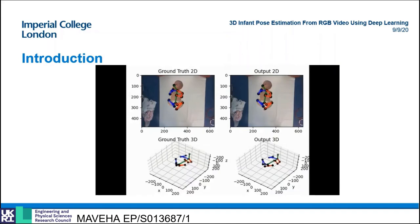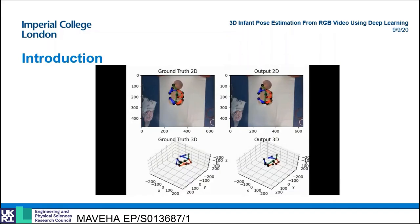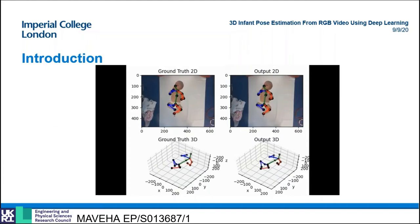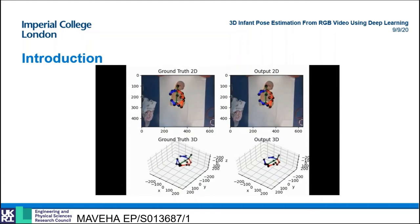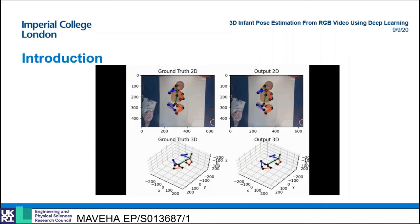I've developed a deep learning model capable of estimating the 3D pose of an infant from RGB video. This model achieves state-of-the-art results on the benchmark mini RGBD dataset whilst removing the requirement for an input depth channel.